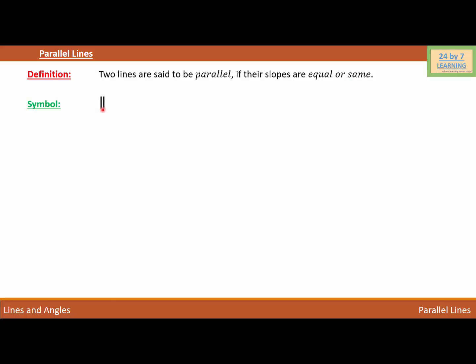Basically, if we want to say that two lines are parallel, we will use this symbol. In order to explain parallel lines, I'm going to consider two lines. Let this be line L and this be line P. Let the slope of line L be M1 and the slope of line P be M2.